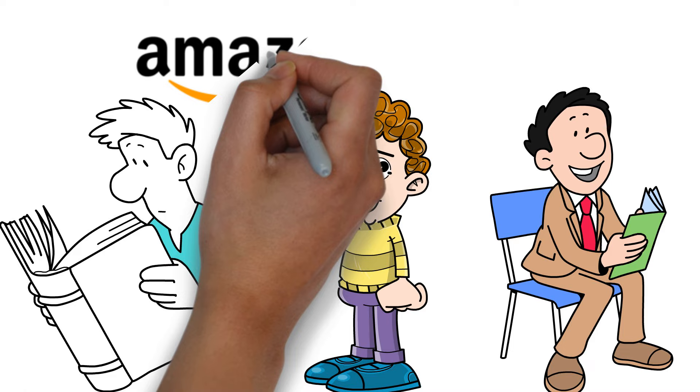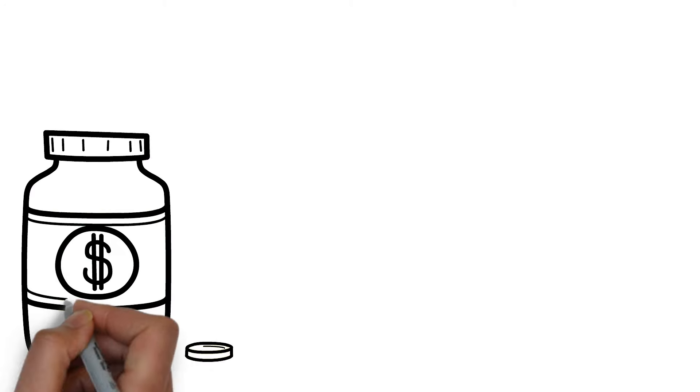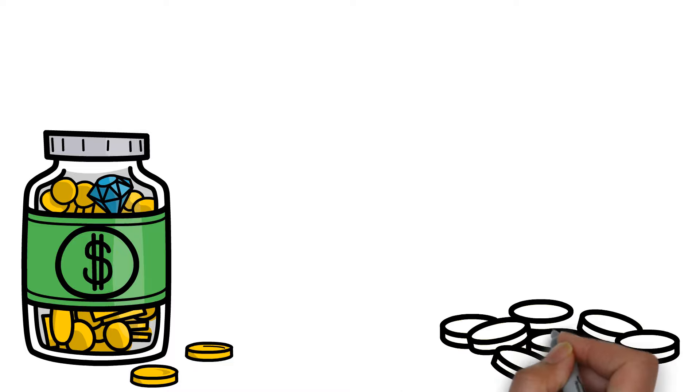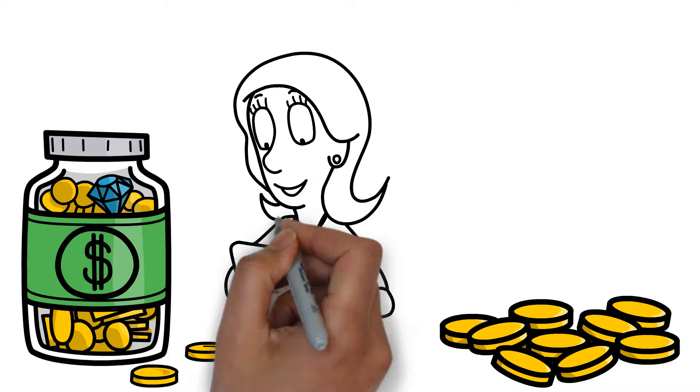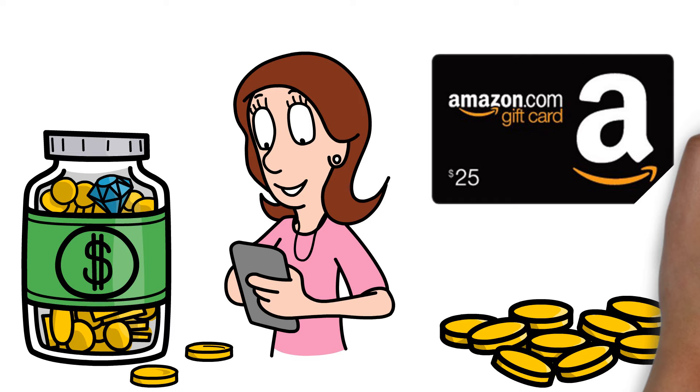After putting off purchasing an e-reader for what seemed like an eternity, I finally did it this year, and I've read more books than in the last 10 years, all while saving money. There are a lot of books on Amazon that cost between $1 and $5, and Kindle Unlimited is a membership option that comes with a ton of reads. It is a really practical tool because of the frequent book deals and the compatibility with Amazon gift cards.